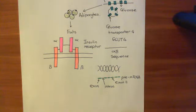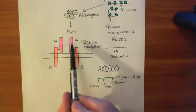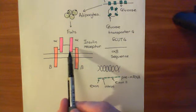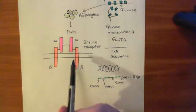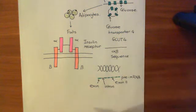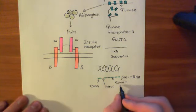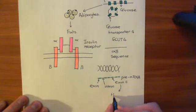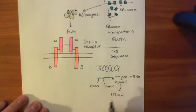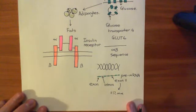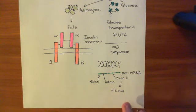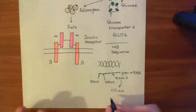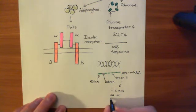If you do include exon 11, the alpha polypeptide produced has 12 extra amino acids. It doesn't affect the beta piece at all — it only affects the alpha piece, which gains 12 extra amino acids.